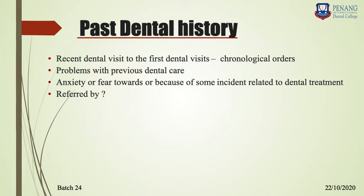If the patient had a restoration 15 years back, write that out. Record from the first dental visit — if it starts from childhood, write from childhood — noting all dental visits and what treatment the patient underwent. These are all important details.